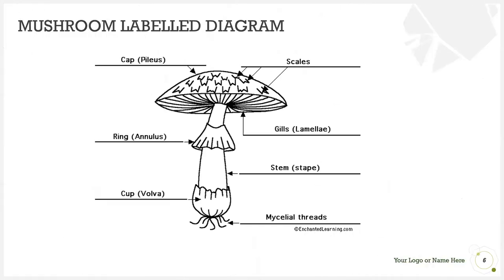This is a labeled diagram of a mushroom. Generally, the identification process takes place by identifying the cap, the scales, and the gills of the mushroom.